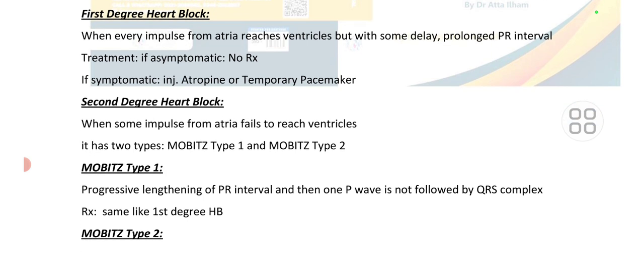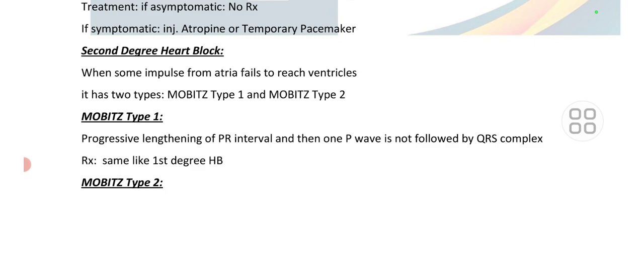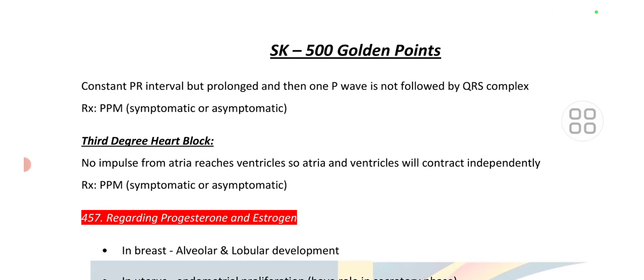Second degree heart block: some impulses from the atria fail to reach the ventricle. It has two types — Mobitz type 1 and Mobitz type 2. In Mobitz type 1, there is progressive lengthening of the PR interval, then one P wave is not followed by a QRS complex. In Mobitz type 2, there is a constant but prolonged PR interval, and then one P wave is not followed by a QRS complex.